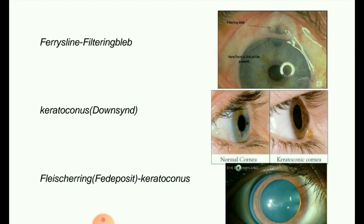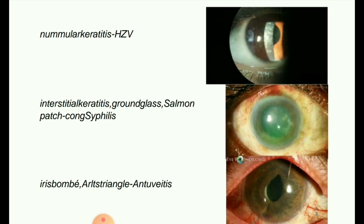Fleischer rings are associated with keratoconus and Wilson's disease. Next image: numular keratitis. It is a feature of viral keratoconjunctivitis and the most common feature of adenoviral keratoconjunctivitis and ocular adenovirus infection. It is also seen in herpes zoster ophthalmicus infections. It is characterized by the presence of anterior stromal infiltrates, as seen in the image.